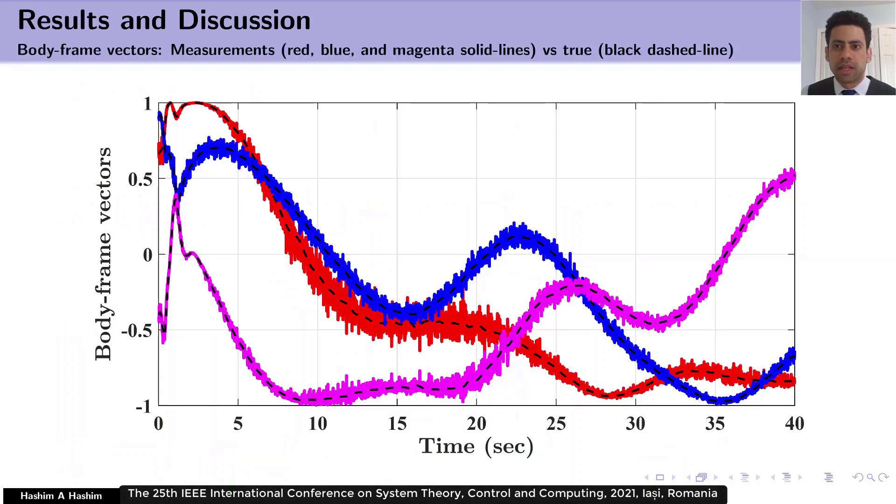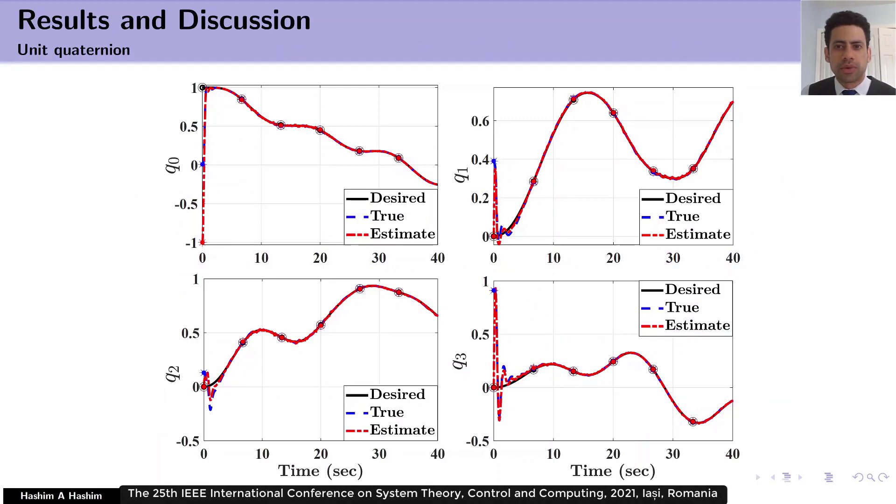The figure on the slide shows body frame vectors, where the measurements are plotted as red, blue, and magnetic solid line, while the true data are plotted as a black dash line. As you can notice, high level of uncertainties is affecting the measurements. This figure shows the strongest tracking capabilities, despite uncertain measurements, and large initialization error in unit quaternion. Here the true orientation is marked as blue dashed line. The estimates are depicted as a red center line, and the desired trajectories are shown in black solid line.